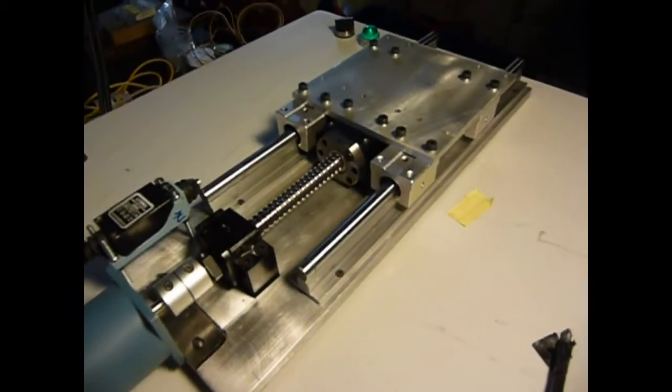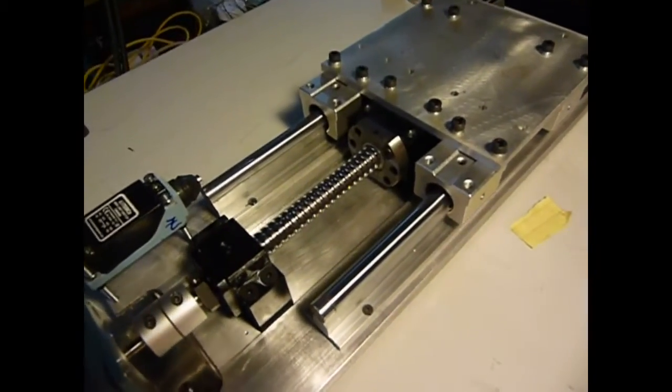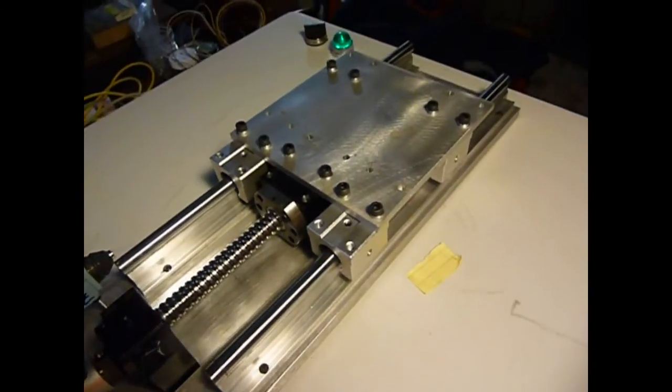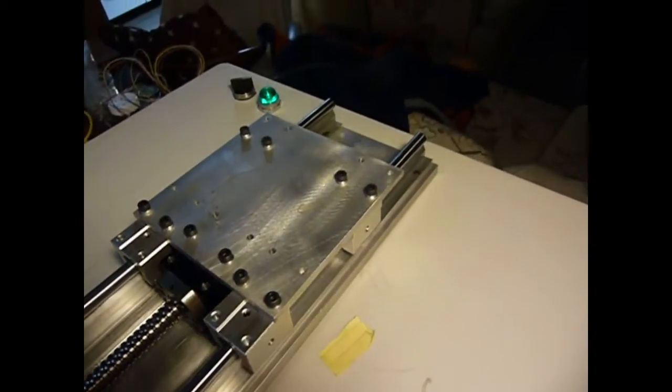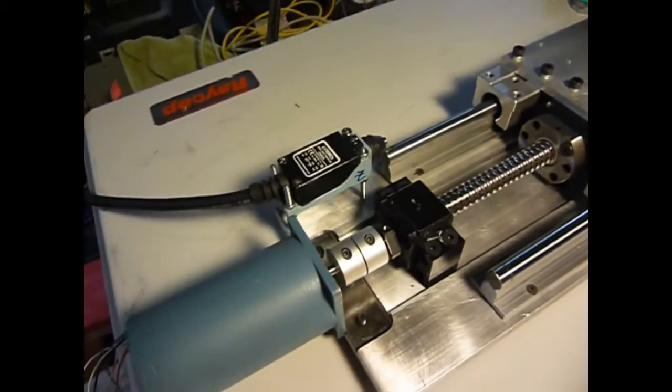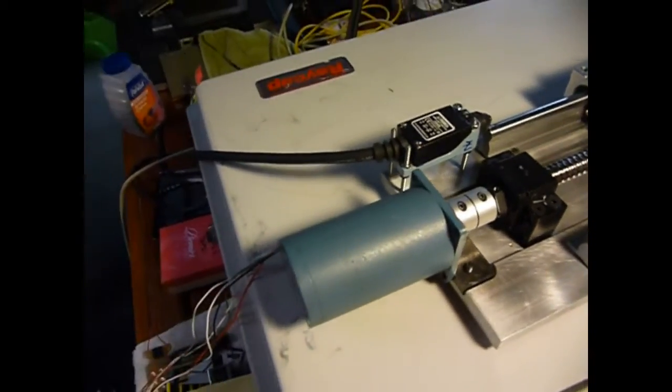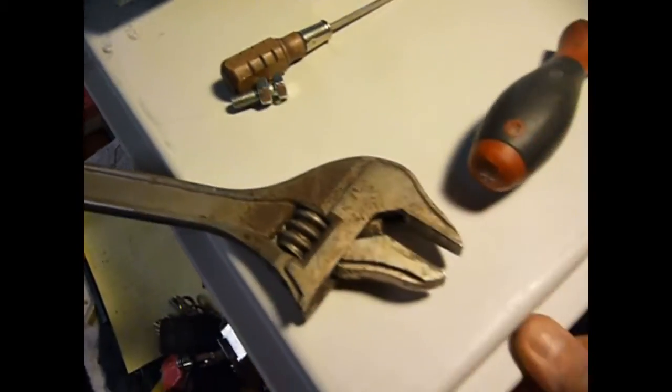Here's an overview of the Z-axis I built. The linear rails, linear bearings, ball screw, ball screw support bearings, coupling, and limit switch I all got on eBay.